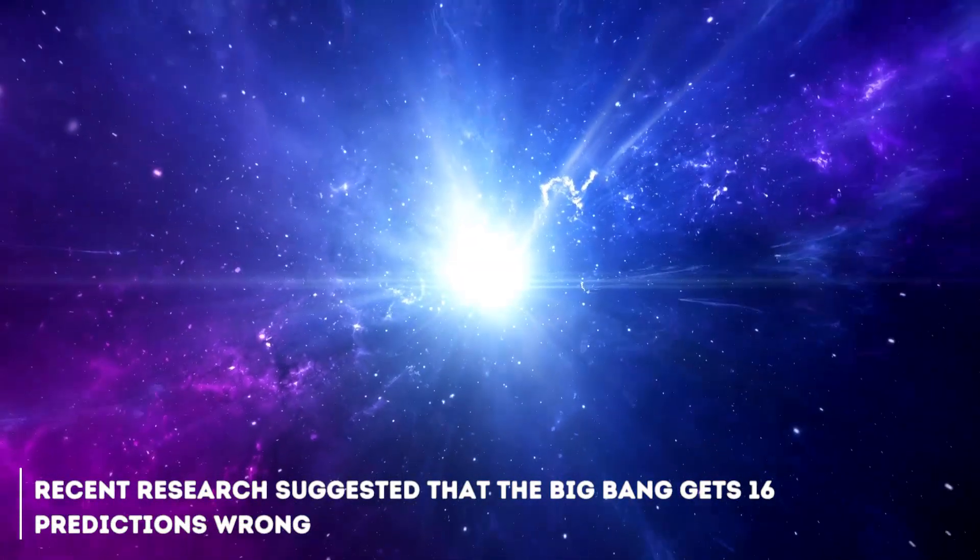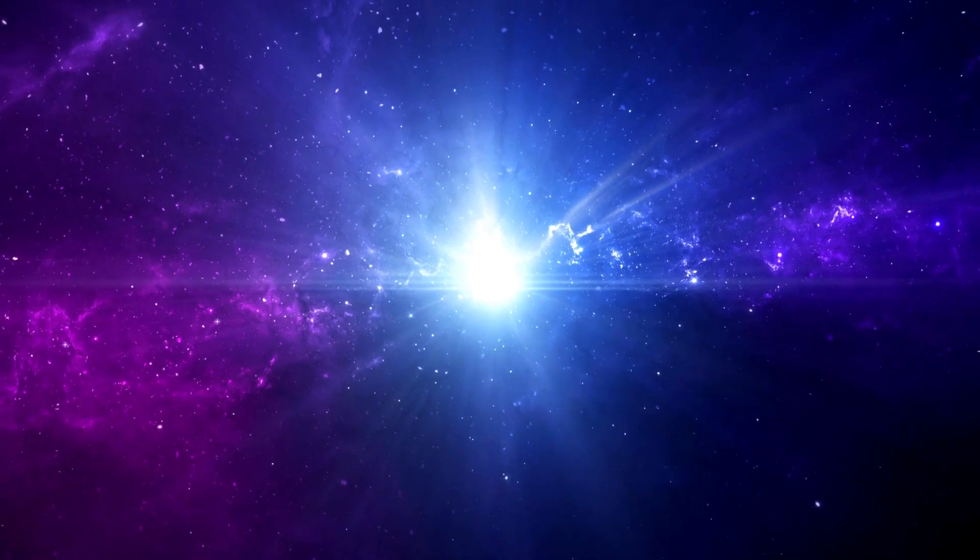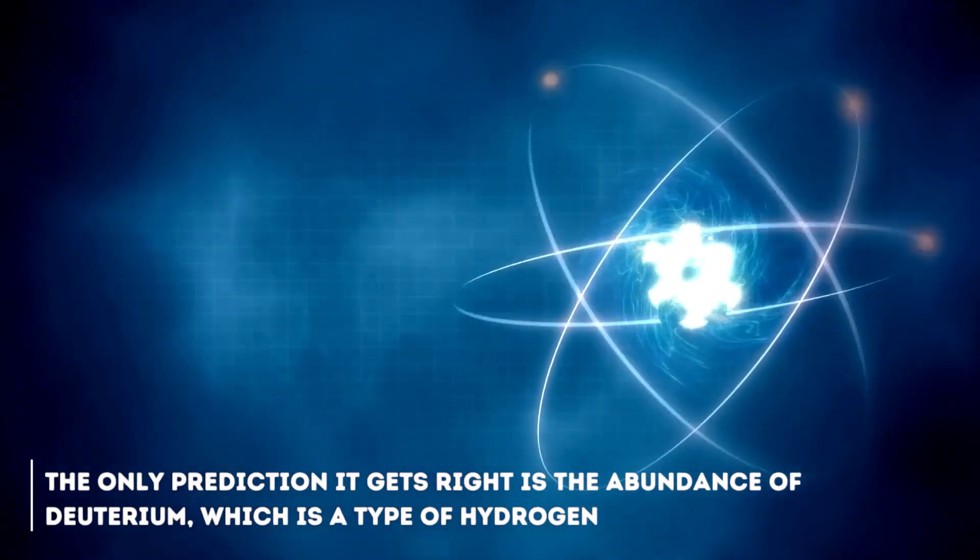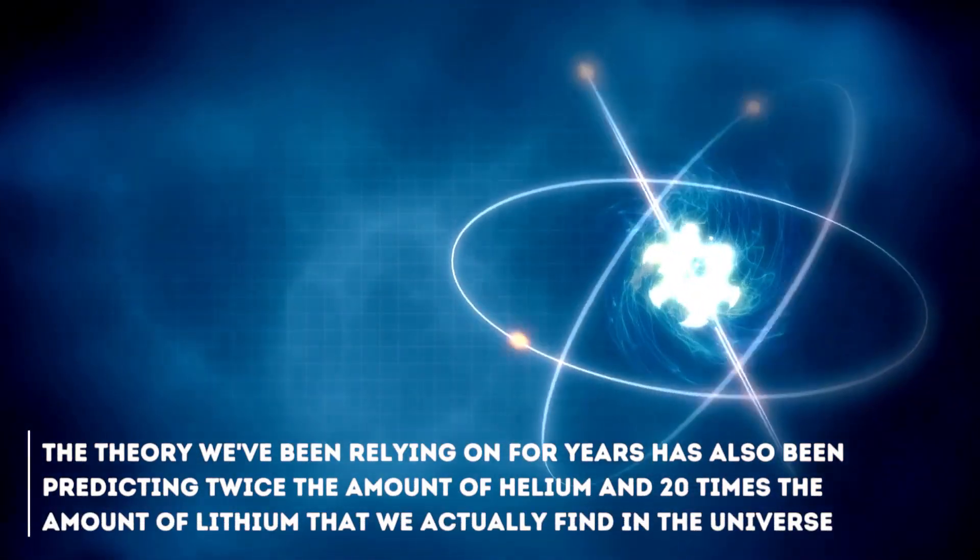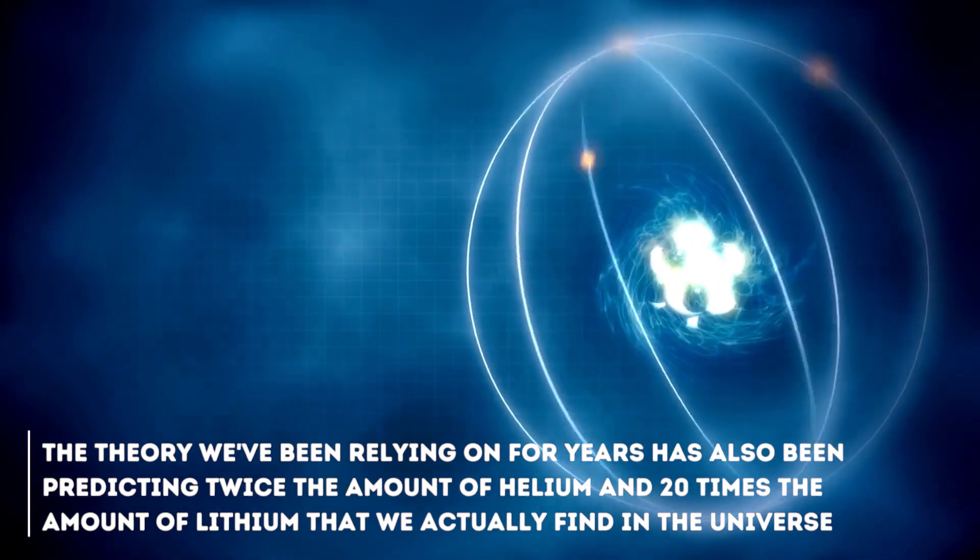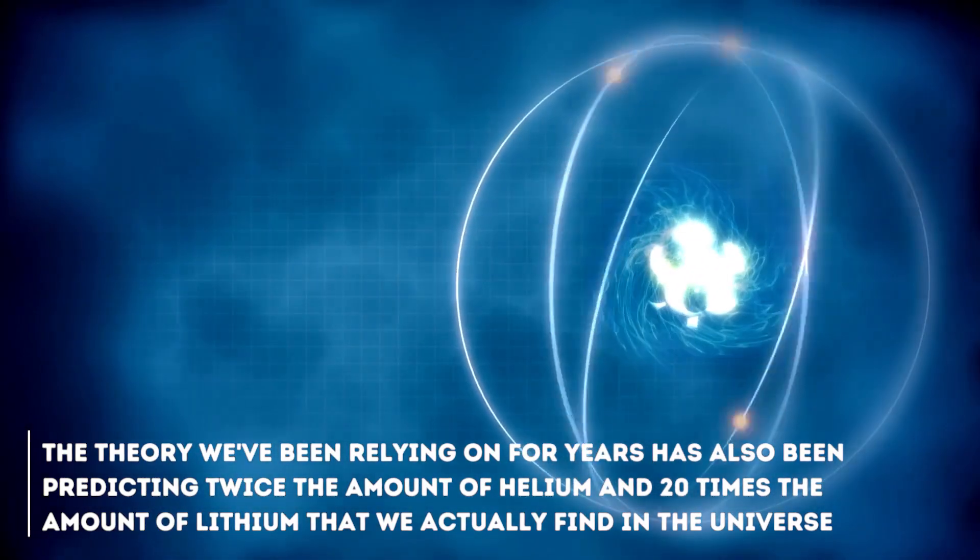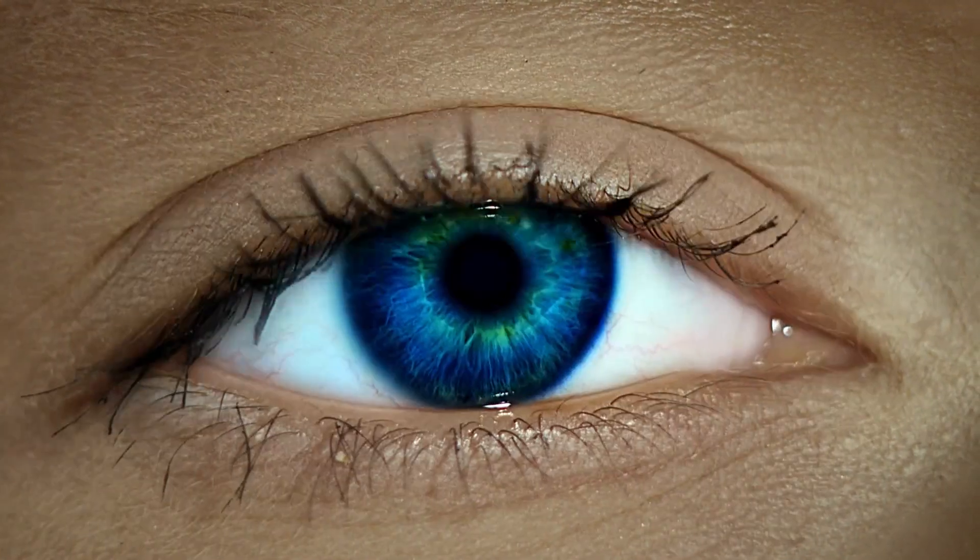Recent research suggested that the Big Bang gets 16 predictions wrong. Yes, 16. The only prediction it gets right is the abundance of the deuterium, which is a type of hydrogen, but that's not all. The theory we've been relying on for years has also been predicting twice the amount of helium and 20 times the amount of lithium that we actually find in the universe.